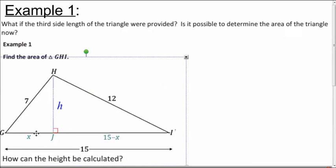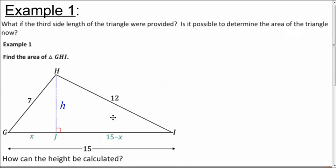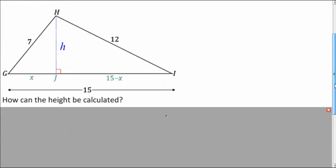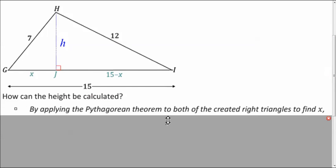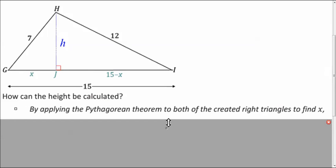But we can still use some properties we have of right triangles because we have those two small ones. So we're going to call this distance here x. That must be 15 minus x since the whole thing is 15. And let's call the height h. Now how can we figure out the height? Well, what can we do with these two right triangles? What theorem can we apply? We can apply the Pythagorean theorem. So why don't you write two expressions, or two equations, and figure out how you could solve this.